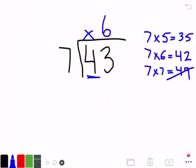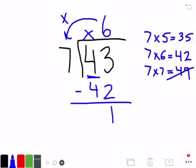That means I could make 6 groups. 6 groups of 7, or 6 times 7 is 42. 43 minus 42 is 1. I check my 1 here to make sure it's smaller than my divisor, and it is. 43 divided by 7, 6, remainder 1.